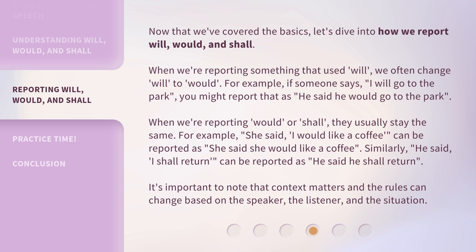Now that we've covered the basics, let's dive into how we report will, would, and shall. When we're reporting something that used will, we often change will to would. For example, if someone says, 'I will go to the park,' you might report that as, 'He said he would go to the park.'